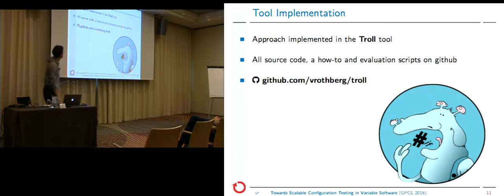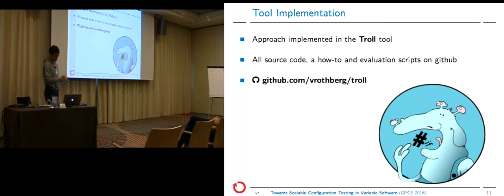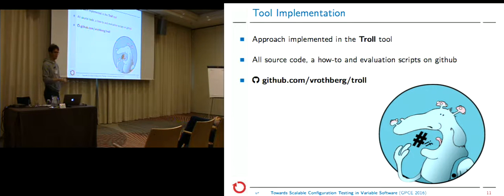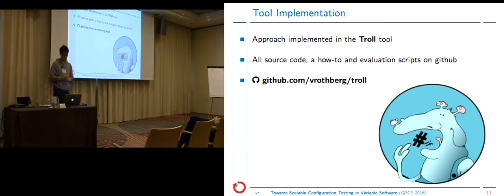We put everything into a tool. You can find it on GitHub — there's also a nice logo my girlfriend made. All source code is available, there's a verbose how-to on using the tool, and all evaluation scripts used in the paper are also on GitHub. There are compiler wrappers so we don't need to compile everything, just apply some parsing.